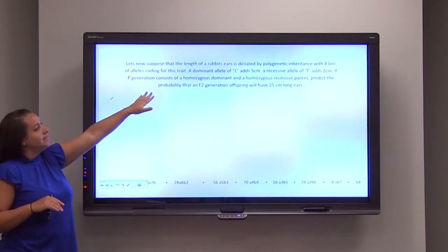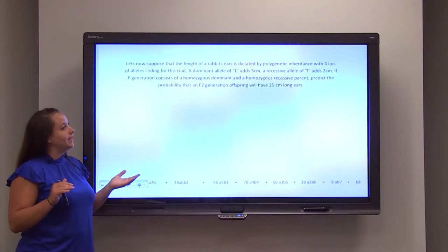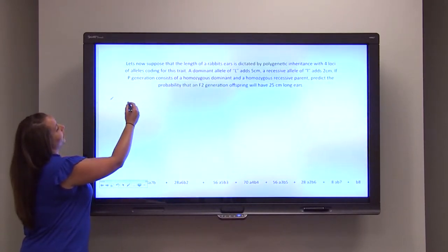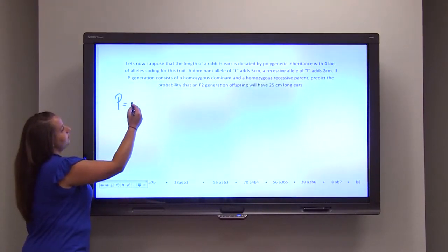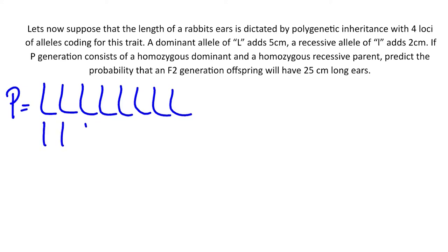If the P generation consists of a homozygous dominant and a homozygous recessive parent, predict the probability that the offspring will have at least 25 centimeter long ears. The homozygous dominant parent has eight alleles of dominant length, and the homozygous recessive parent has eight alleles of recessive length. When we cross these two generations together, we get an F1 generation that is heterozygous in length.